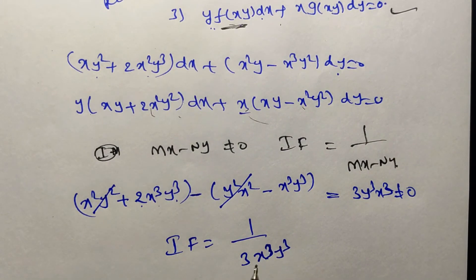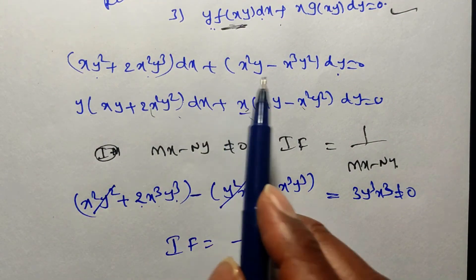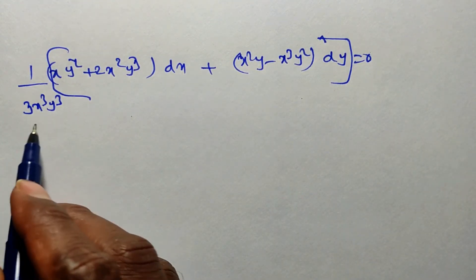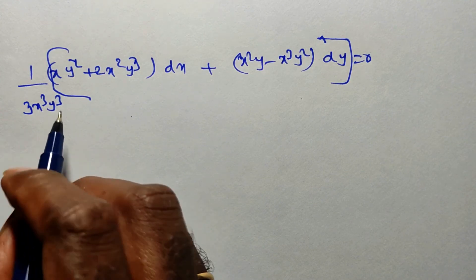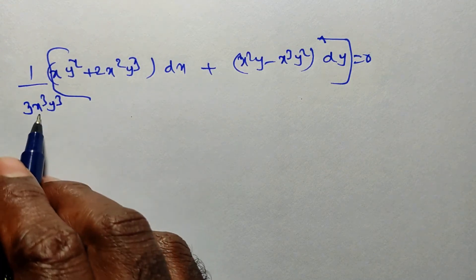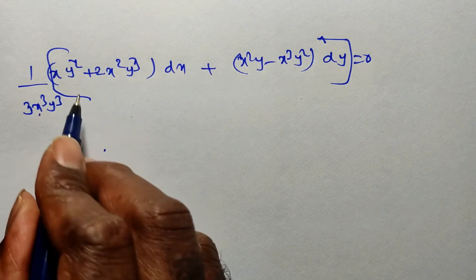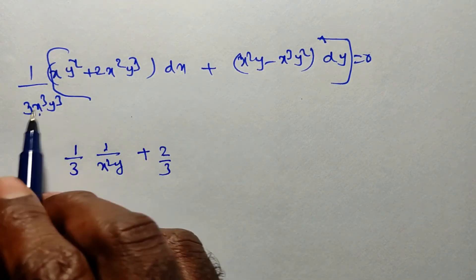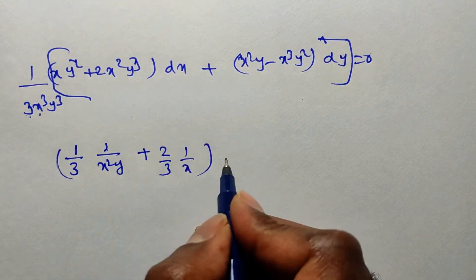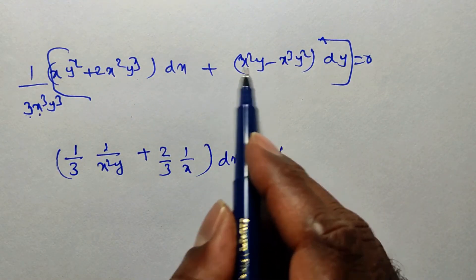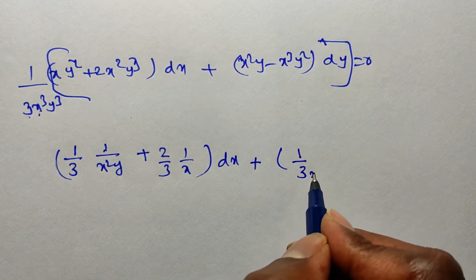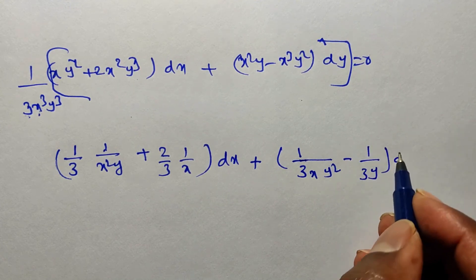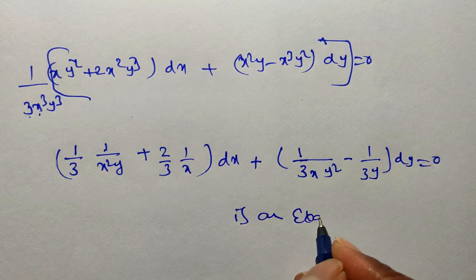Multiply the given differential equation by the integrating factor 1/(3x³y³). Each term: xy²/(3x³y³) = 1/(3x²y); and 2x²y³/(3x³y³) = 2/(3x); for the N terms: x²y/(3x³y³) = 1/(3xy²); and −x³y²/(3x³y³) = −1/(3y). So the equation becomes [1/(3x²y) + 2/(3x)]dx + [1/(3xy²) − 1/(3y)]dy = 0, which is now an exact differential equation.